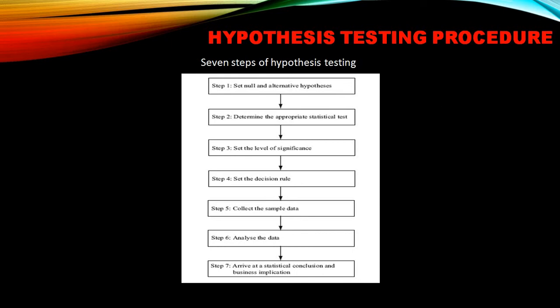Step one: set the null and alternate hypothesis. Step two: determine the appropriate statistical test. Step three: set the level of significance. Step four: set the decision rule. Step five: collect the sample data. Step six: analyze the data. Step seven: arrive at a statistical conclusion and business implication. Remember these seven steps — this is a very important question for your exams.